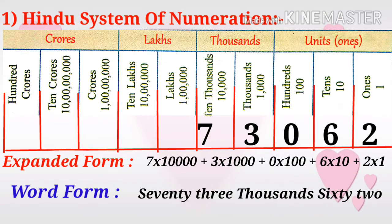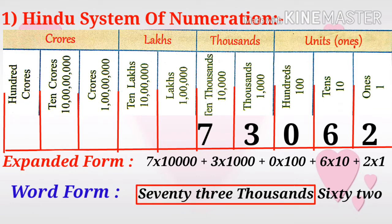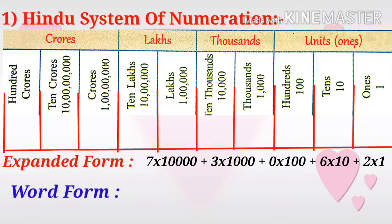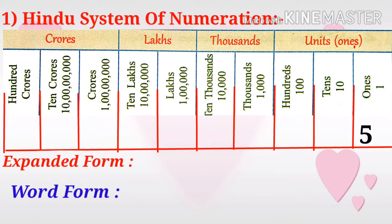Now we can write it in word form. Observe in the chart: 7 is in ten thousands and 3 is in thousands, so together that is seventy-three thousands. 0 is in hundreds place so we do not write it. 6 is in tens place: sixty. And 2 is two. So the word form is: Seventy-three thousand and sixty-two.